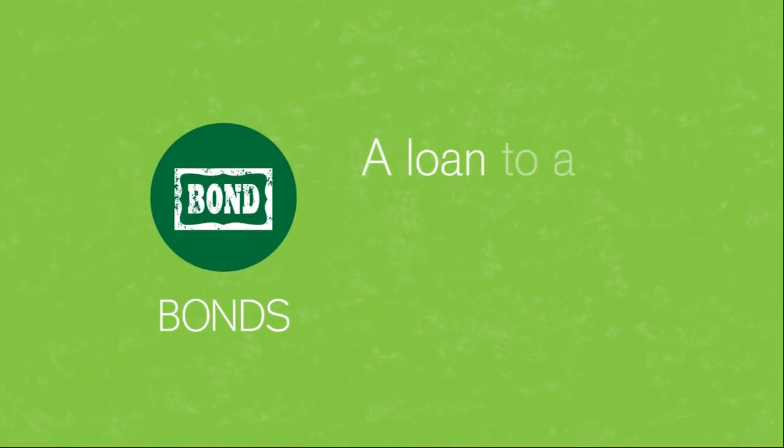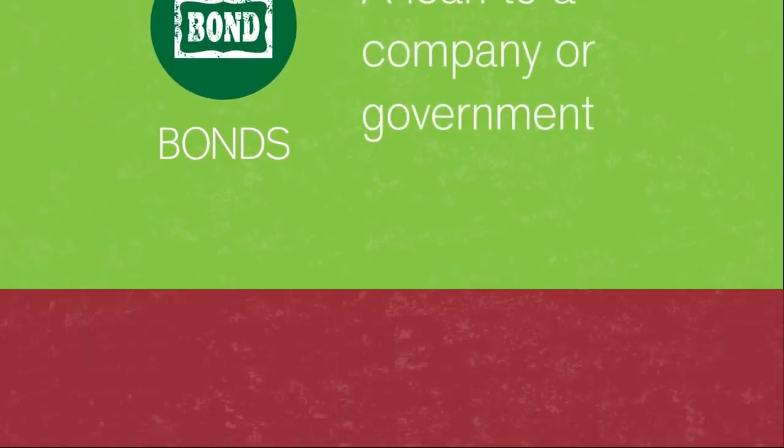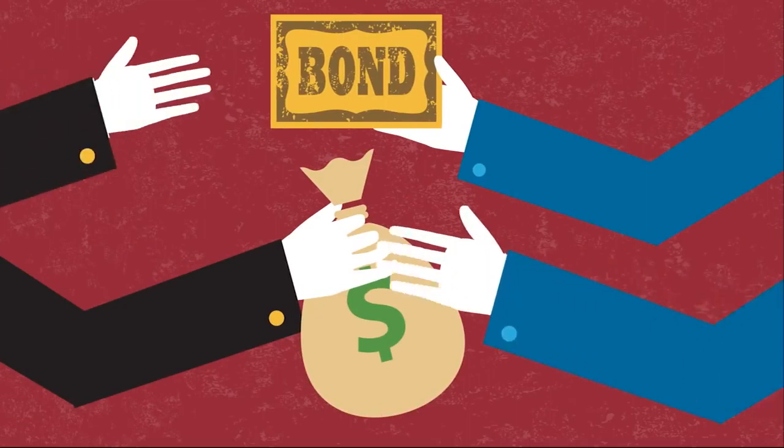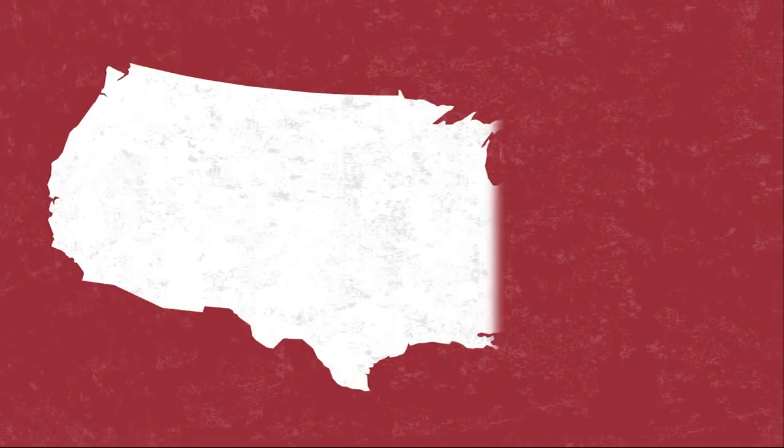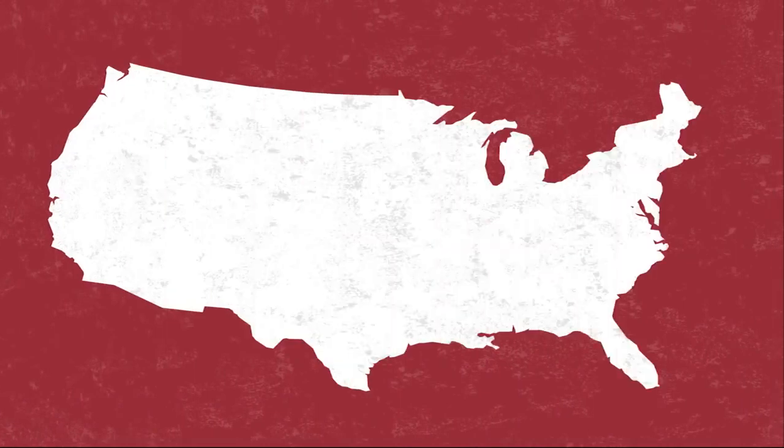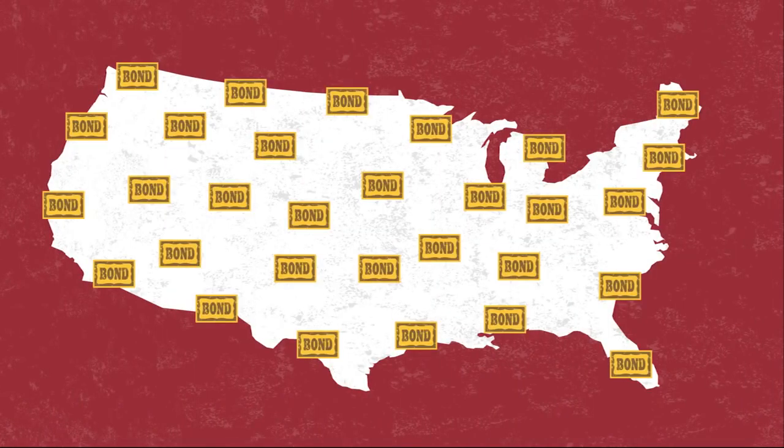Bonds are just a loan to a company or government. They borrow by selling a bond, which is simply a promise to repay the buyer in a fixed number of years at a fixed interest rate. When you hear about the US government borrowing money, have you ever wondered who they borrow from? Chances are, it's you through the investments you make in bonds.